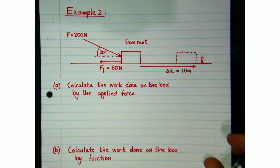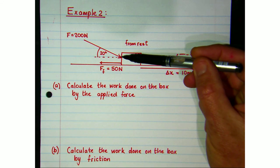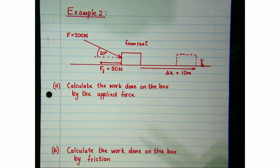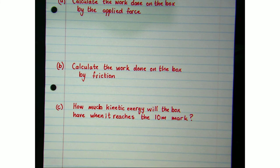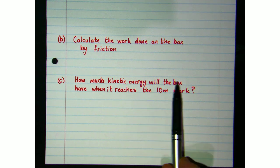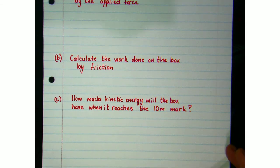Now let's move into a second worked example — this one is not in your notes. We have a 200 newton force being applied to a box; at the same time friction opposes its motion. The box moves 10 meters. You need to find: the work done by the applied force, the work done by friction, and ultimately how much kinetic energy the box will have when it reaches the 10-meter mark. Pause the video and try those three questions.